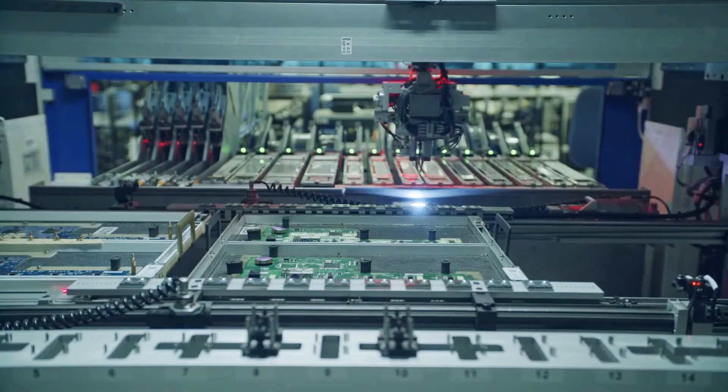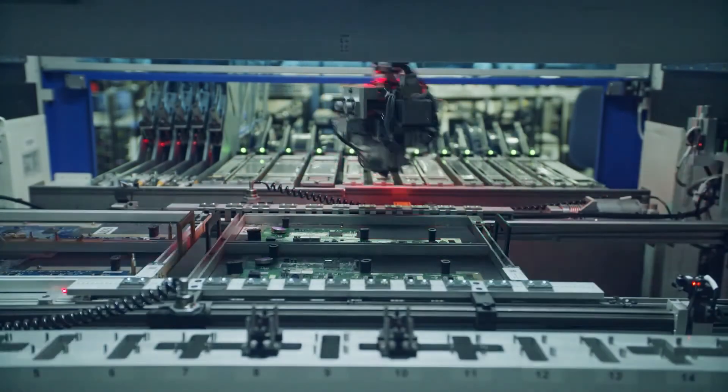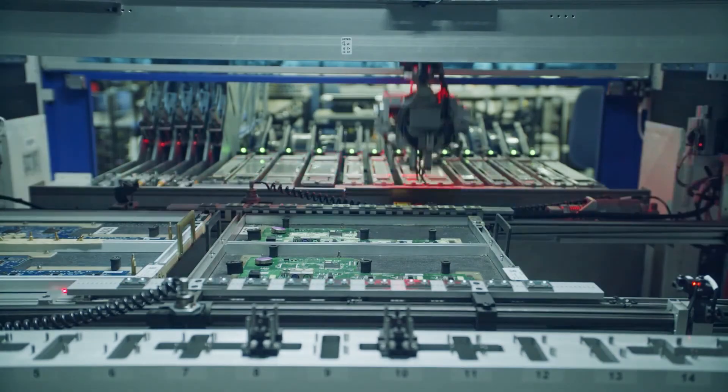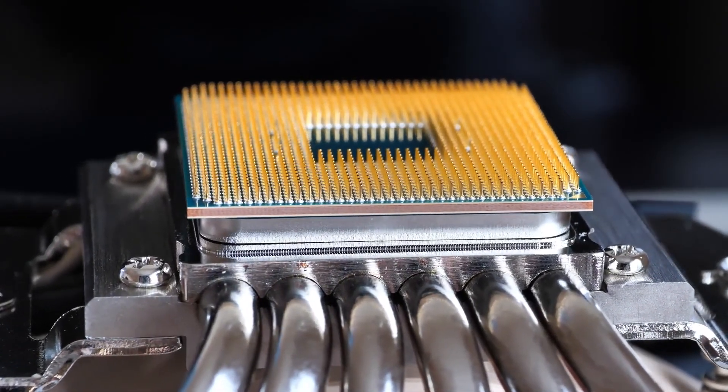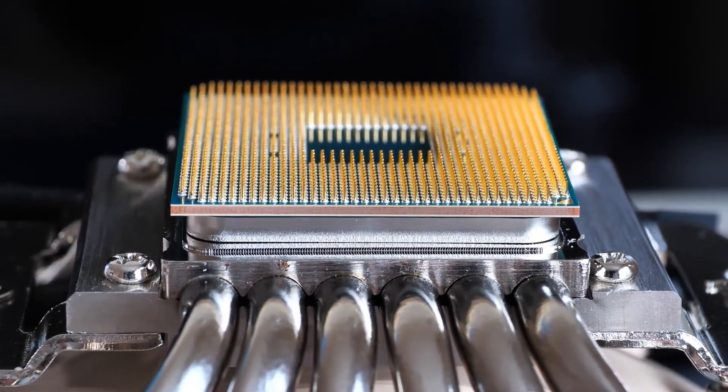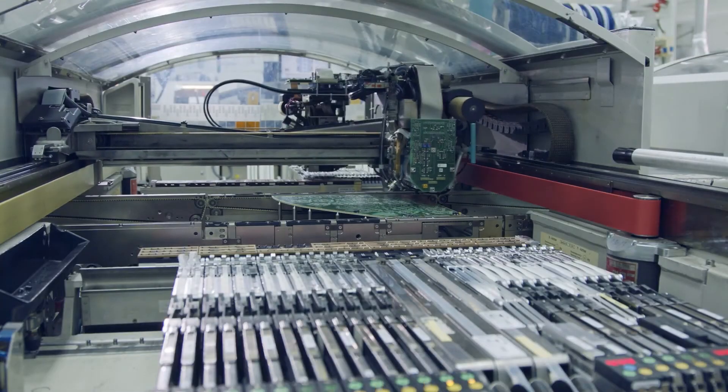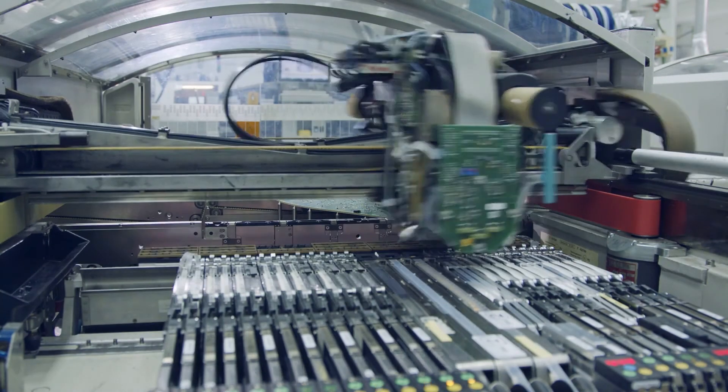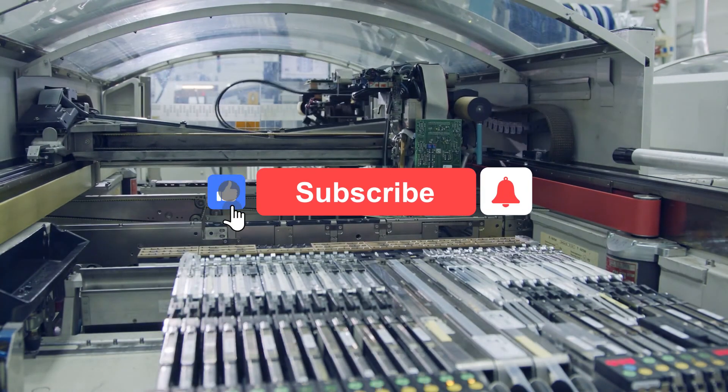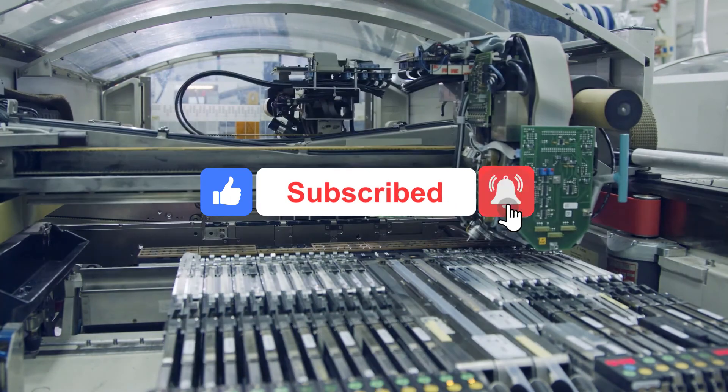As you can tell, the semiconductor completely changed the way digital and electronic devices function and has become extremely important in this day and age. Without semiconductors, we would not have the majority of appliances and devices we use daily, and factories would not be able to function as they would not have the technology necessary to evolve and adapt to the changing times. That is all we have for you today, but make sure to like and subscribe to our channel so you never miss out on another video.